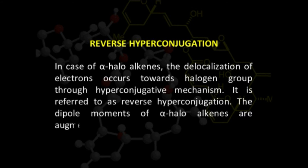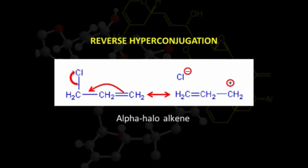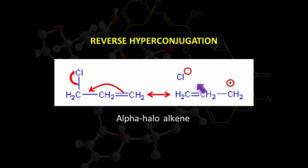The dipole moments of alpha-halo alkenes are increased due to this phenomenon. The carbon-carbon pi bond is alpha to the carbon-chlorine single bond. Therefore, electron release takes place in the opposite direction—the carbon acquires a positive charge and the chlorine acquires a negative charge. Because of the presence of this charge, the compound shows a dipole moment.